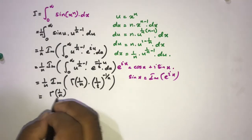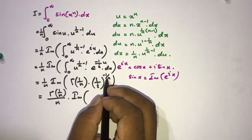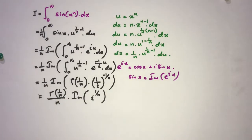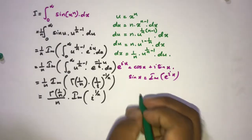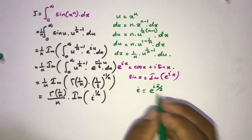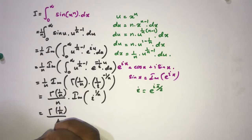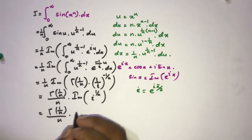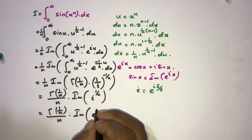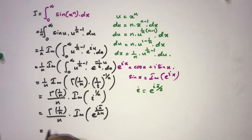We take the imaginary part of (1 over i) raised to the minus 1 over n, which equals i raised to the 1 over n. We know i equals e to the i pi over 2, so this becomes e to the i pi over 2n. Thus we have Gamma(1 over n) over n times the imaginary part of e to the i pi over 2n.